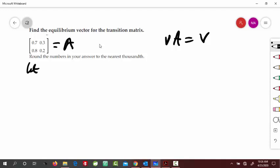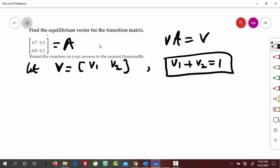So, let's say vector v or row matrix v, which would have a component like v1, v2. So, and because this is a probability vector, the sum of the component must be equal to 1. So, this is one of the equations we will use it later.